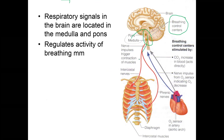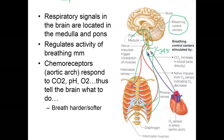Nerves come out of the brain stem and go to your intercostal muscles and diaphragm. The neck nerves — C3, C4, and C5 — become the phrenic nerve to help you breathe. We also have chemical receptors in our body called chemoreceptors, which are sensitive to changes in carbon dioxide, pH, and oxygen. Depending on the levels of these in your body, that determines how hard you're breathing.